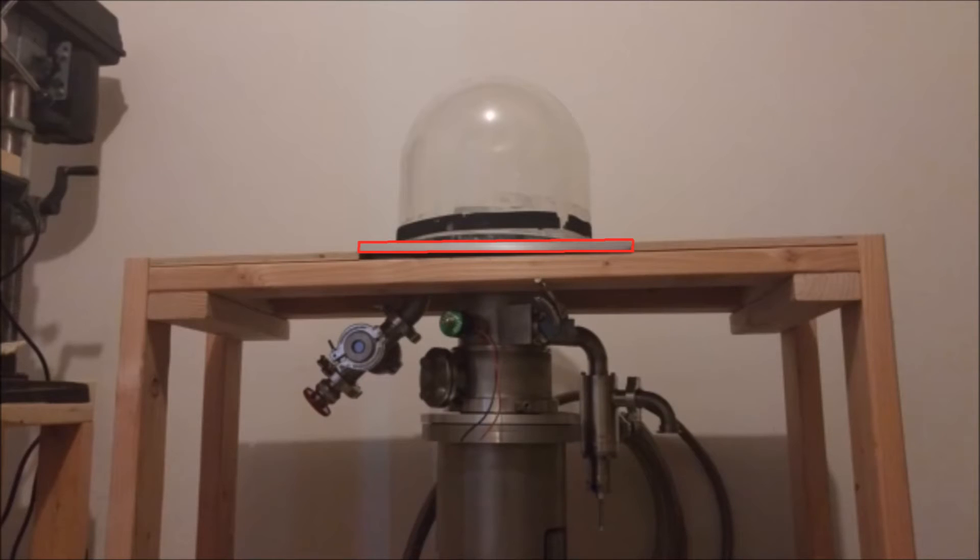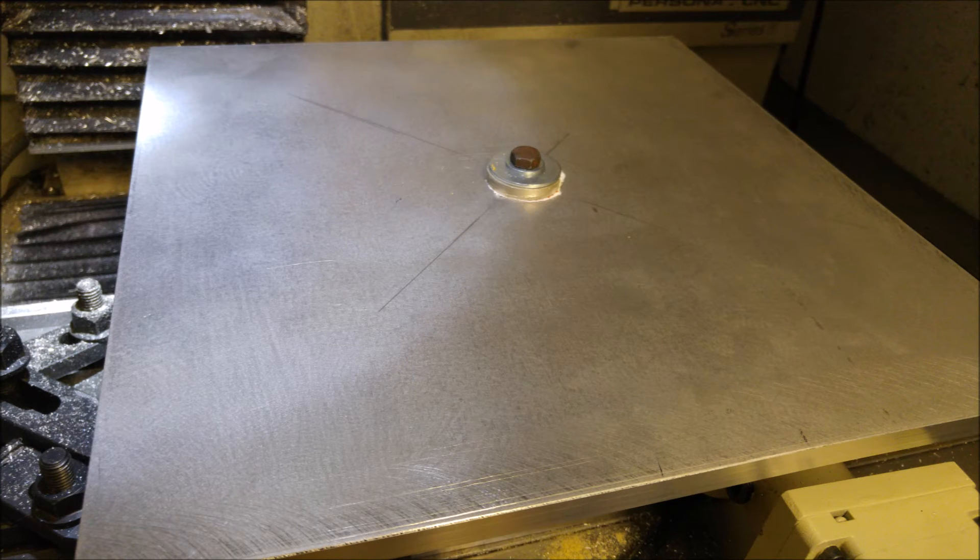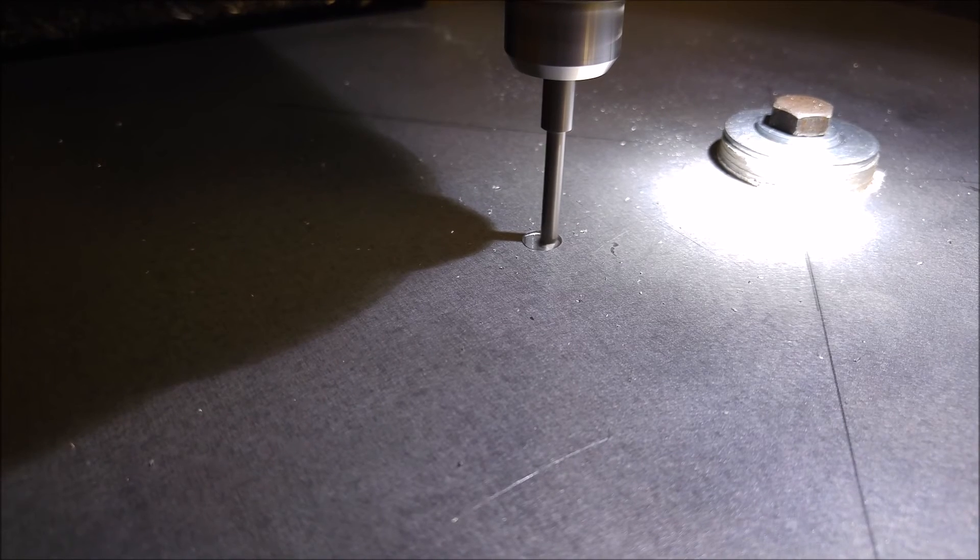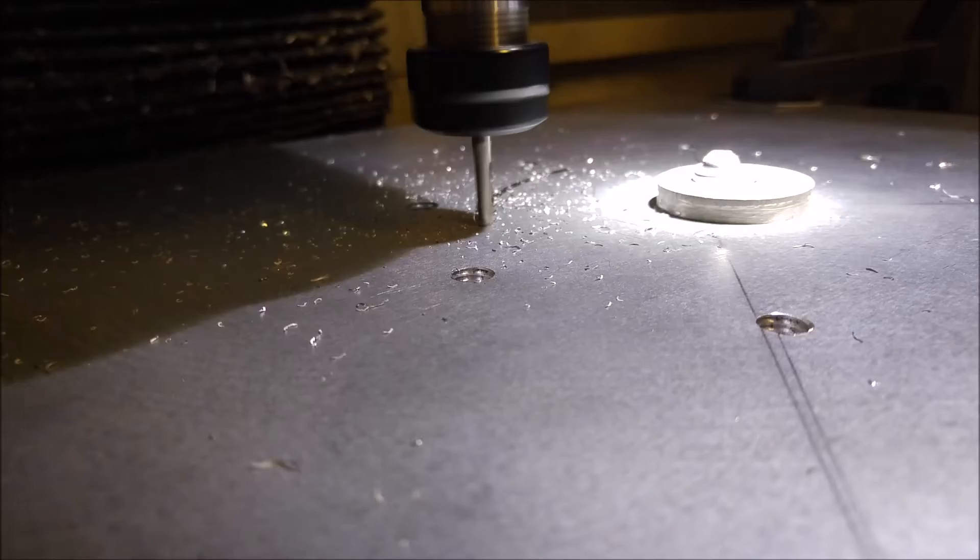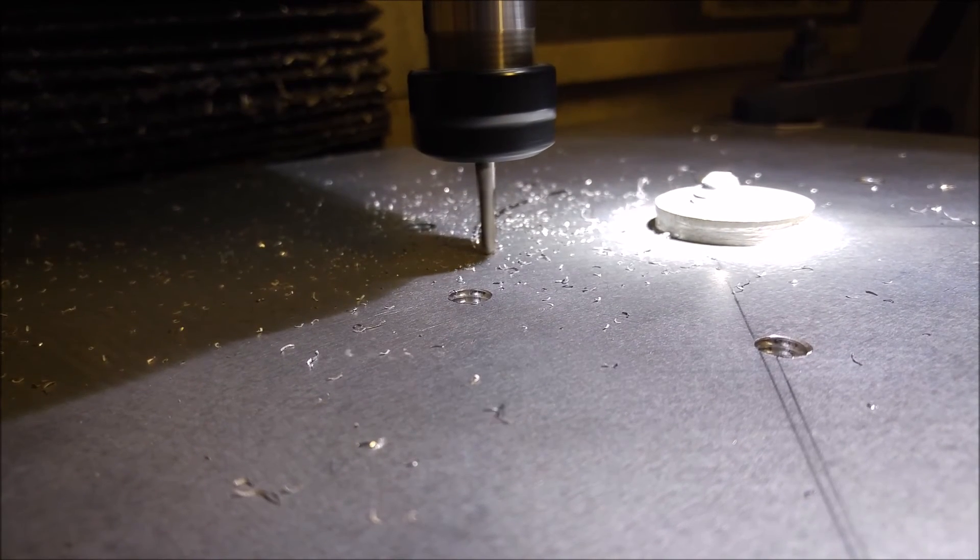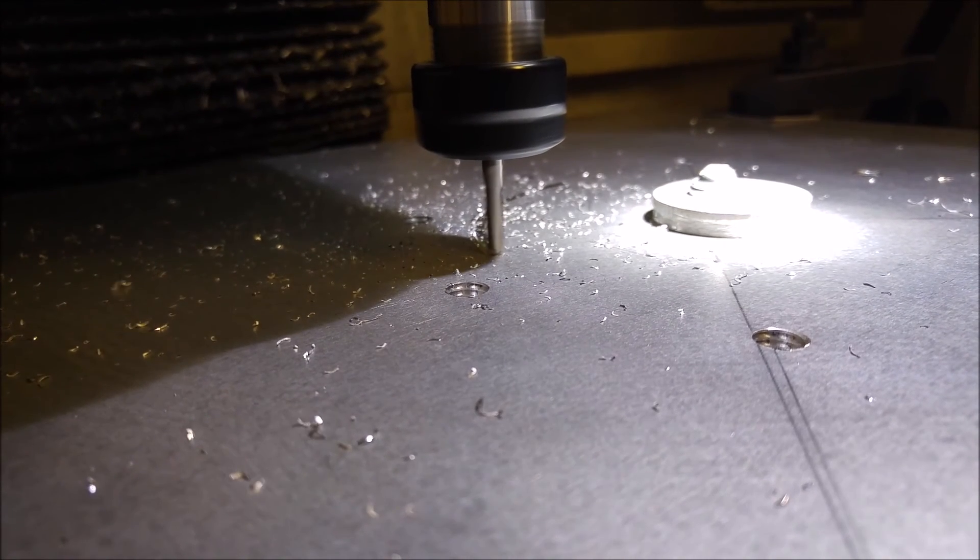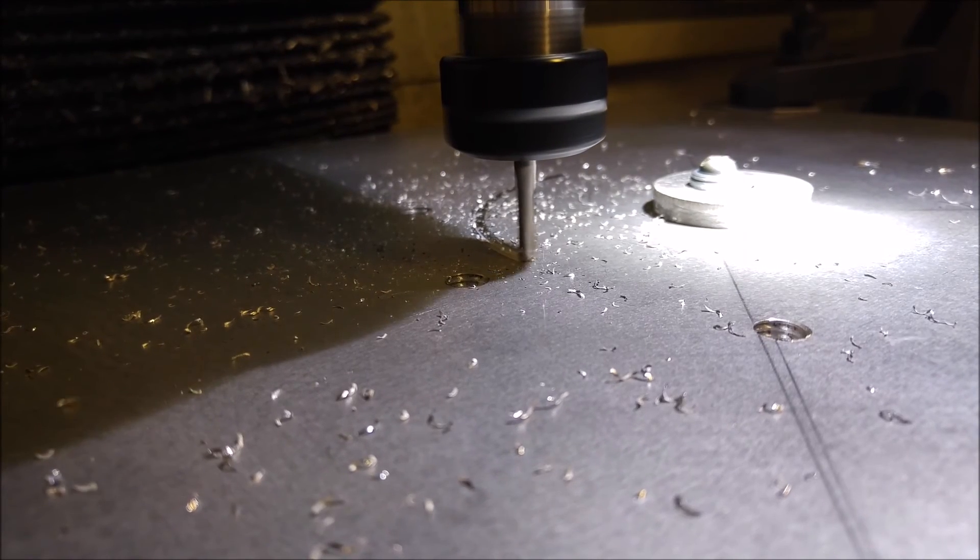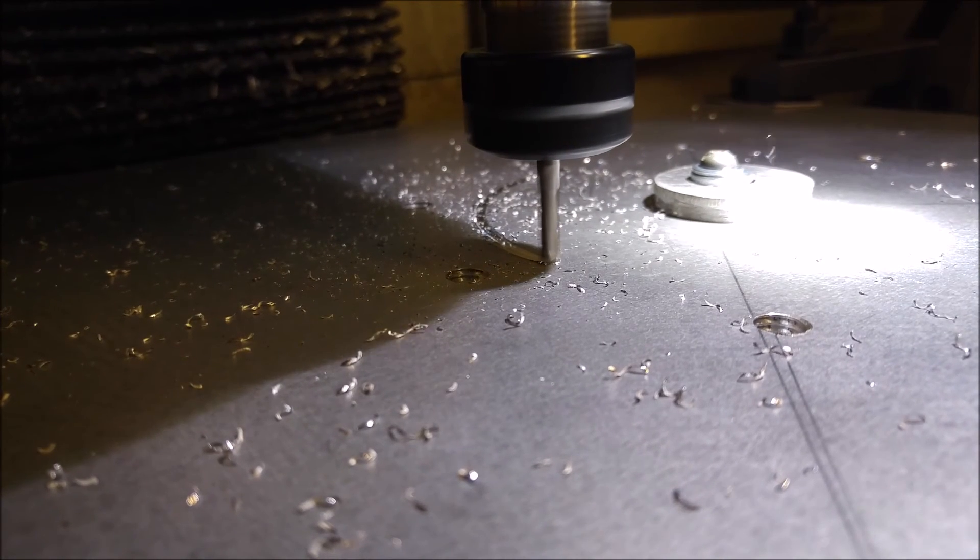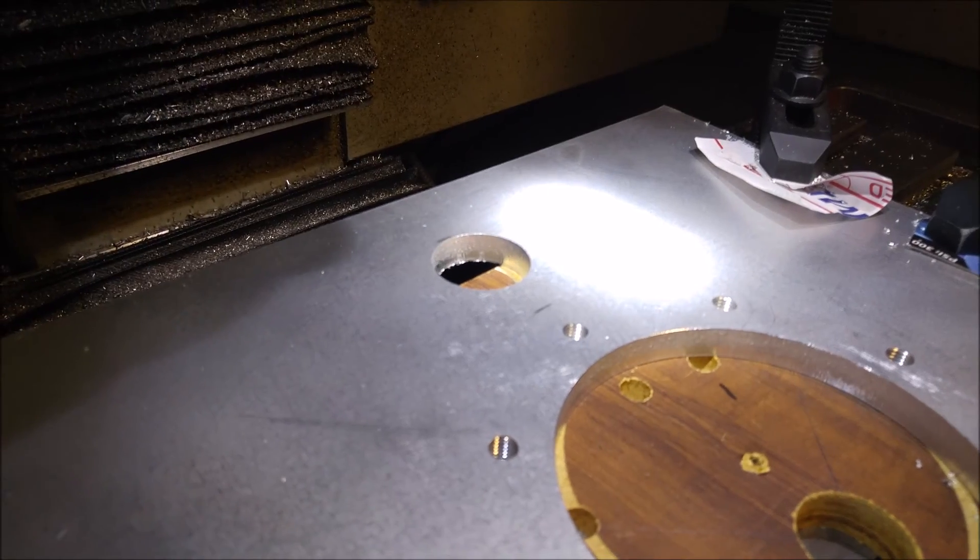Next up is the base plate for the chamber. We started by mounting a 15 inch by 15 inch piece of aluminum stock onto a CNC mill and cutting threads for it. Next we cut the main pass through, and then the auxiliary feed through.